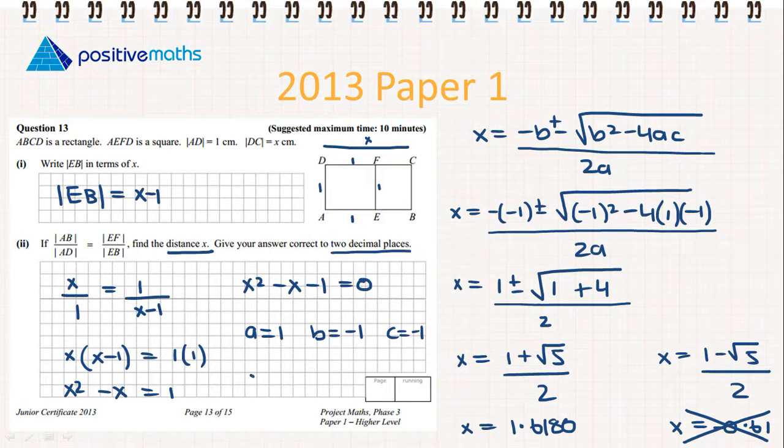We do need to round our value to two decimal places. So our final answer will be x equals 1.62.